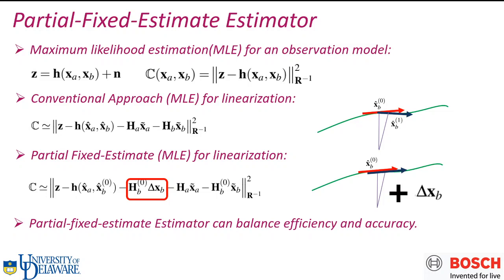However, if we fix the linearization point for certain states, like XB, then we can save some computation with precomputed Jacobians. But in order to compensate for the linearization point change of XB, we need to add this correction term, delta XB. Overall speaking, the partial fixed estimator can balance between efficiency and accuracy.